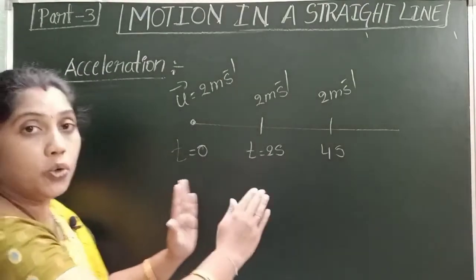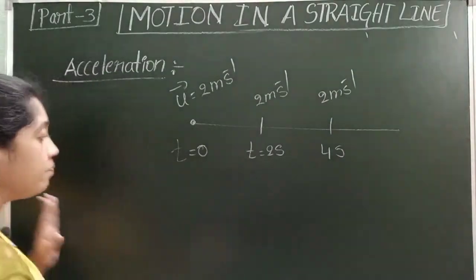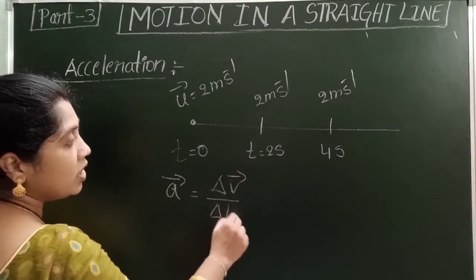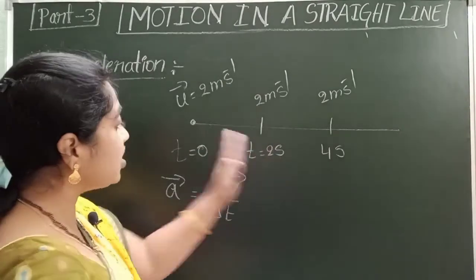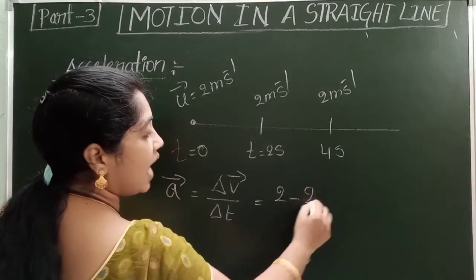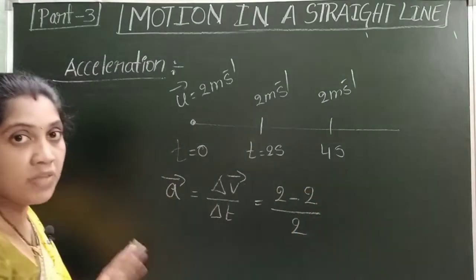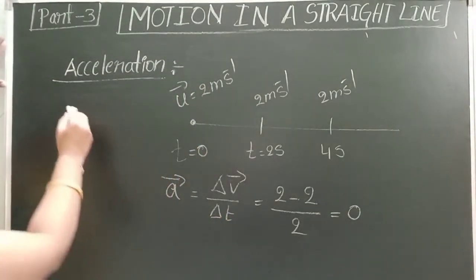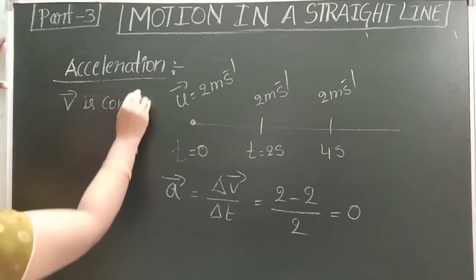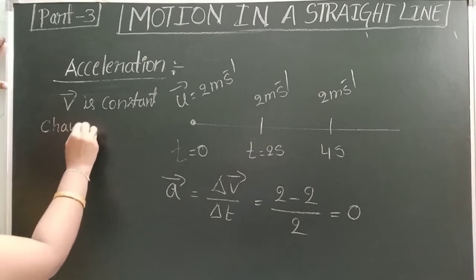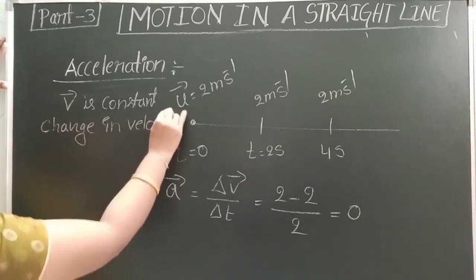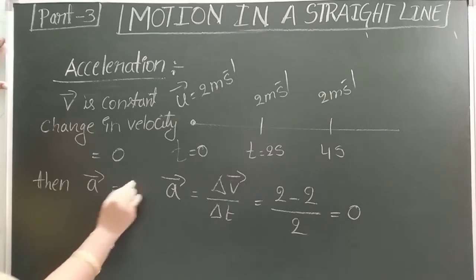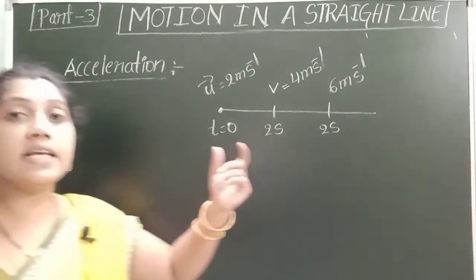When an object moves with constant velocity, it is said to have uniform velocity. Let us take any 2 time intervals — the velocity remains constant. Acceleration a-bar equals change in velocity by time. From 0 to 2 seconds: final velocity is 2, initial velocity is 2, change in time is 2 seconds. So acceleration equals zero, because velocity is constant, change in velocity is zero, and therefore acceleration is also zero.